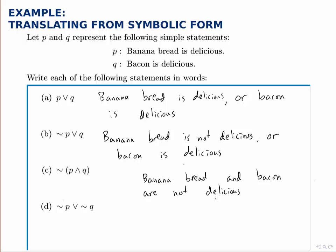For the next one, we have NOT P OR NOT Q each individually. So for this I can negate the first one, then write OR and negate the second one.